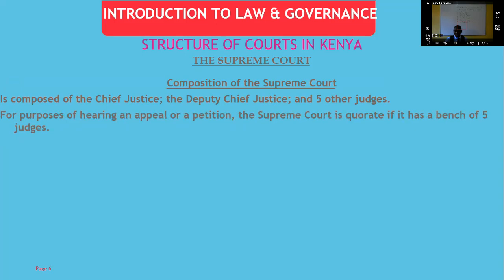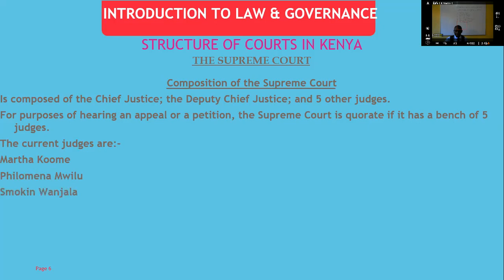What is the composition of the Supreme Court? It has a Chief Justice, a Deputy Chief Justice, and five other judges — so there should be at least seven judges at any point in time. For hearing an appeal or a petition, the Supreme Court has quorum if it has a bench of at least five judges; we have seen them sitting as six or seven. The current judges are: Chief Justice Martha Koome, Deputy Chief Justice Philomena Mwilu, Justice Smokin Wanjala, Justice Isaac Lenaola, Justice Njoki Ndung'u, Justice William Ouko, and Muhammad Ibrahim.